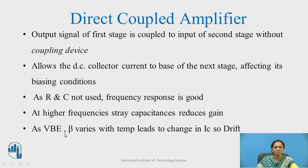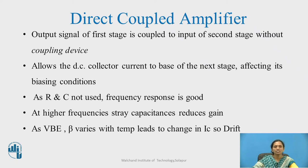As temperature varies, VBE value will change, beta value will change, and therefore IC will change. That IC is further given to the next stage of the amplifier, which again causes further changes in the biasing conditions. Therefore, we cannot avoid this kind of loss at greater frequencies.